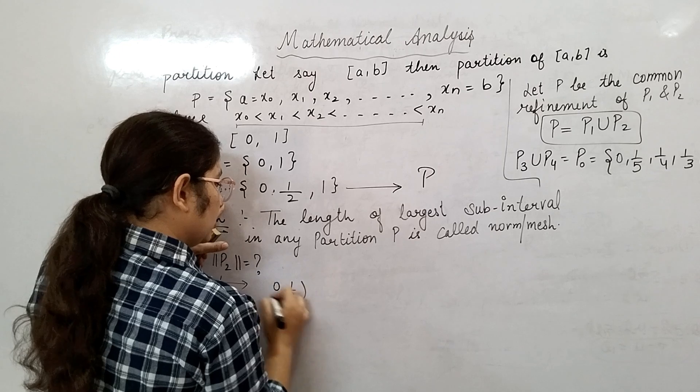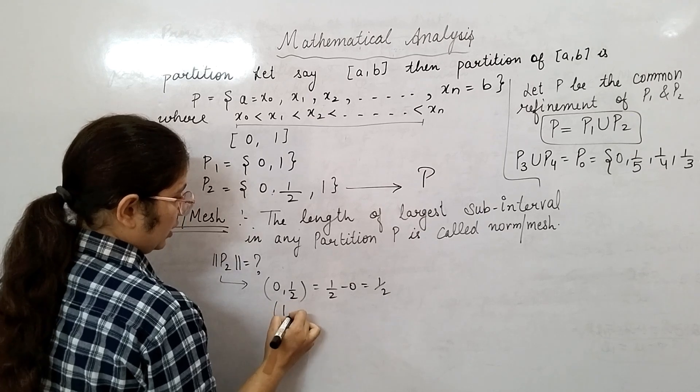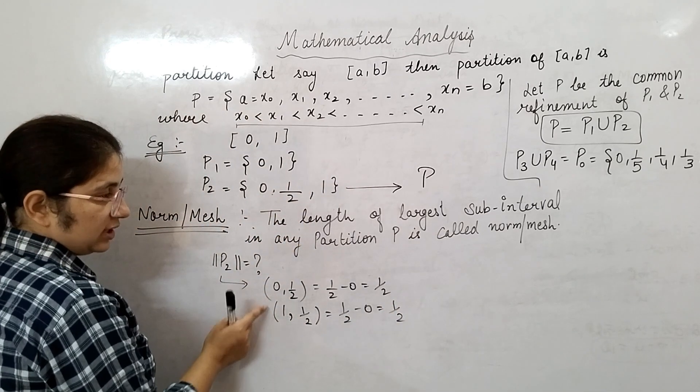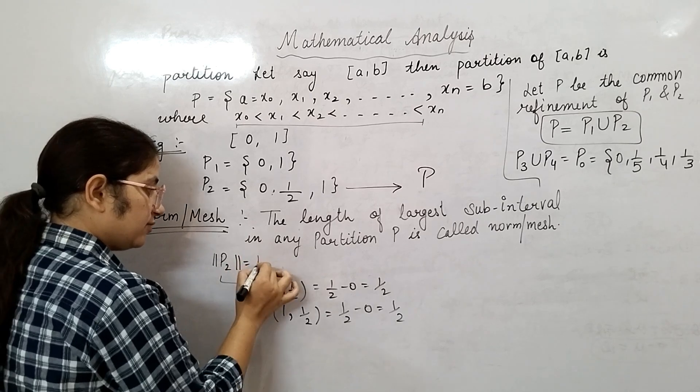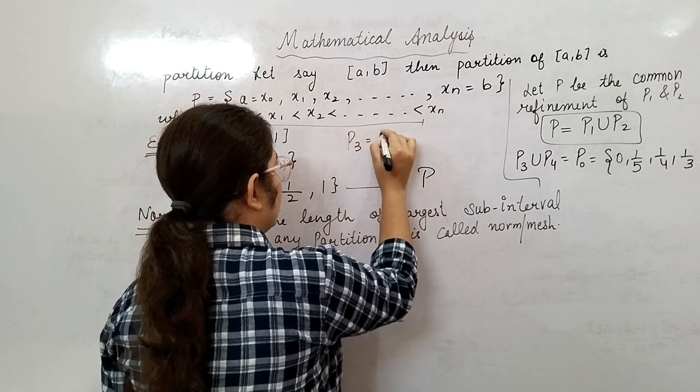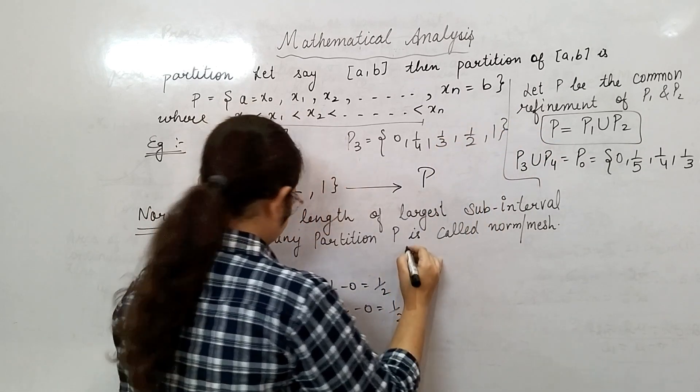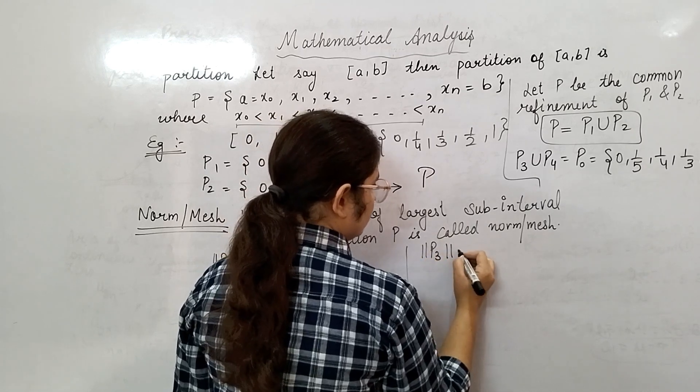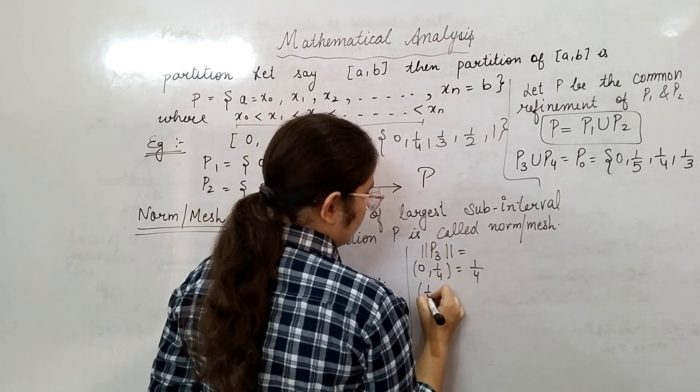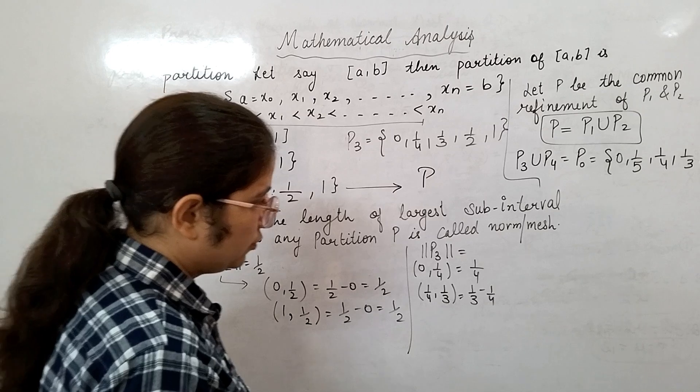P₂ has [0, 1/2] with length 1/2 - 0 = 1/2, and [1/2, 1] with length 1 - 1/2 = 1/2. In both cases it is 1/2, so the norm of P₂ will be 1/2. Let's take P₃. P₃ has: [0, 1/4] with length 1/4; [1/4, 1/3] with length 1/3 - 1/4 = 1/12; [1/3, 1/2] with length 1/2 - 1/3 = 1/6;